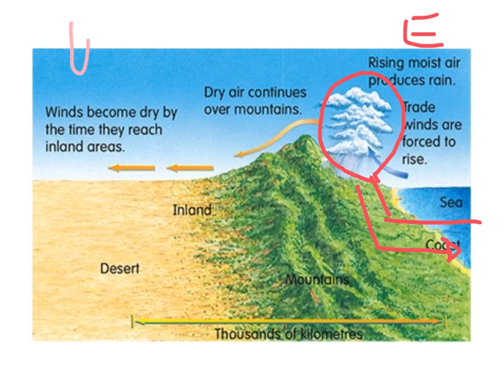Unfortunately for the western side of the Great Dividing Range, due to the fact that precipitation has occurred on the eastern side, no cloud has managed to make its way inland or to the west of the Great Dividing Range. This leads to a far drier climate and therefore influences which types of environment are found on the western side. This effect is known as the rain shadow effect.